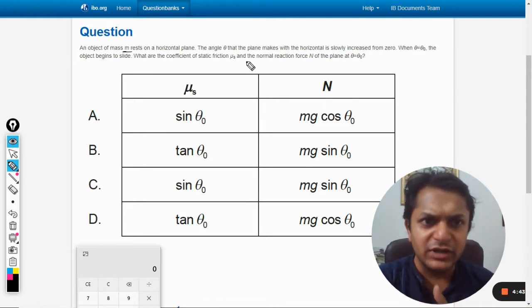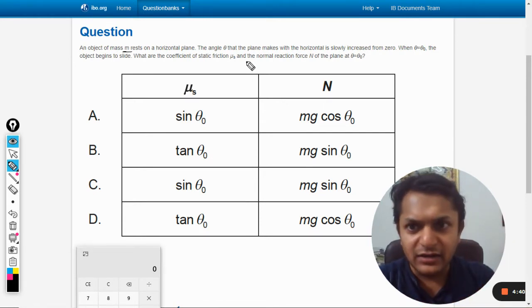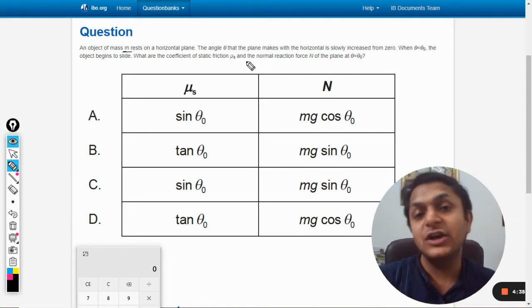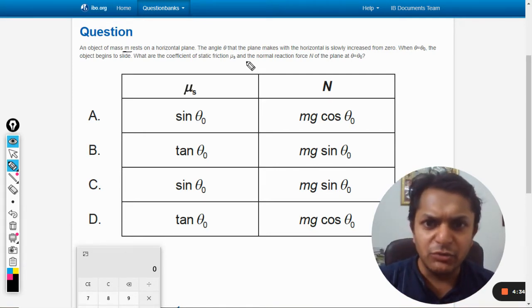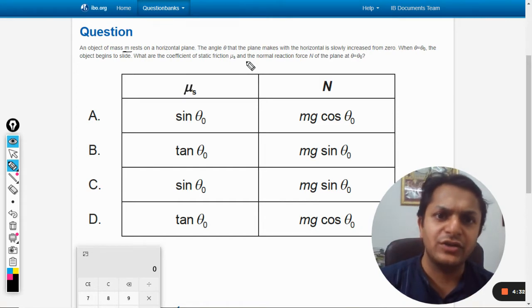When theta becomes equal to theta naught, the object begins to slide. That becomes the limiting case of friction. What are the coefficient of static friction μs and the normal reaction N of the plane at theta equals theta naught?